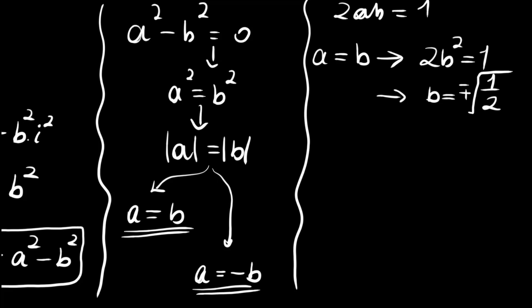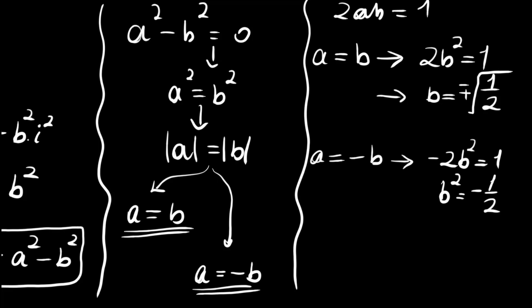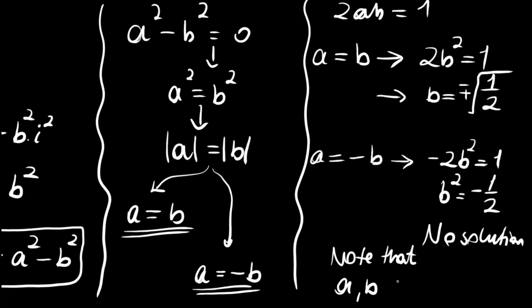If a equals minus b, then substituting gives minus 2b squared equals 1, so b squared equals negative one half — no solution from here, since a and b must both be real numbers to be used in a plus bi.